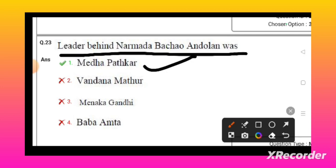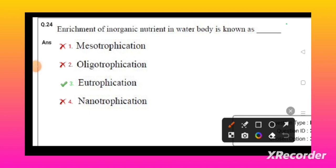Most easiest and important question: enrichment of inorganic nutrients into the water body is known as eutrophication.